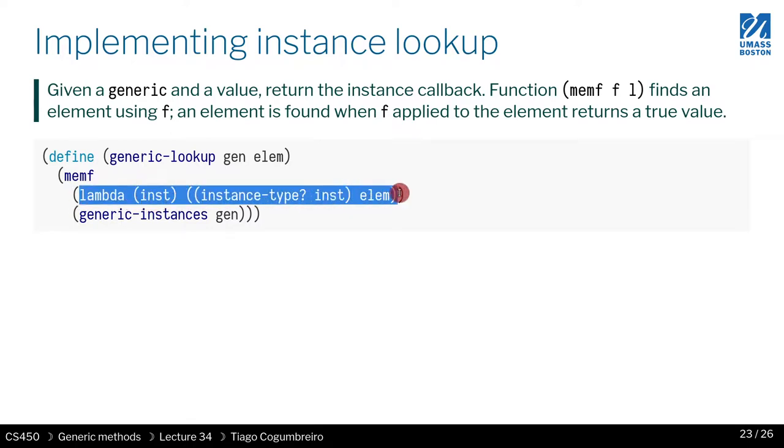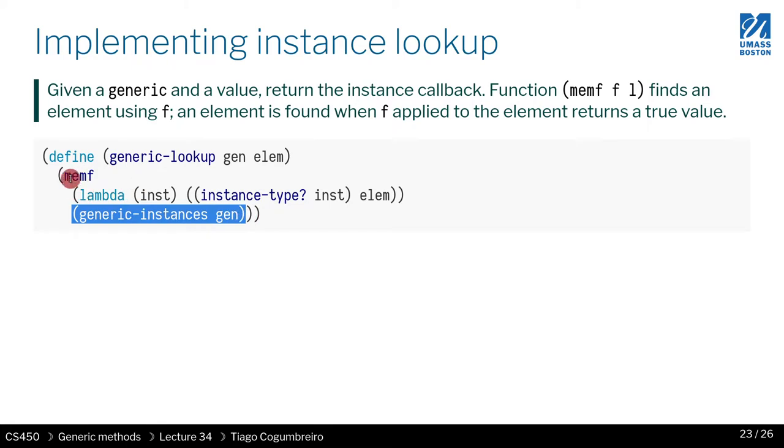So, what it will do, we take the instance. And if the instance type is true, then what we do is we take the instance type and we return true if the instance type returns true to that element. So, this is the same thing as asking, let's say this were the instance of a number, then this whole thing would be equivalent to our column number question mark of element. And here you will get basically what memf is going to do. It's going to return the particular instance that matches this predicate.